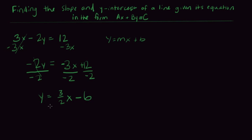So now that we have it in the form y equals mx plus b we know that m is the slope and that's equal to 3 over 2. So m equals 3 over 2.